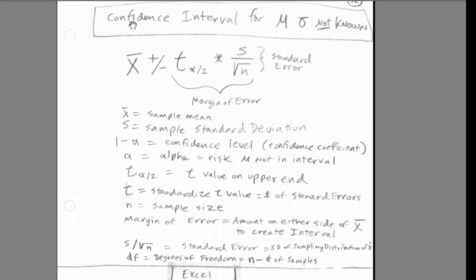Here's our formula for confidence intervals for estimating mu when sigma is not known. So we have our x-bar plus or minus t sub alpha divided by 2 times, and we're going to have to use our sample standard deviation divided by square root of n. This is all going to be the margin of error. That will be our standard error.